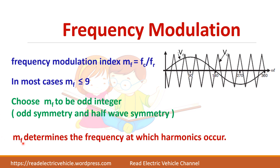The frequency modulation ratio mf also determines the frequencies at which harmonics occur. For example, if mf equals 9, the dominant harmonic is the 9th, with the 7th and 11th appearing as side bands.